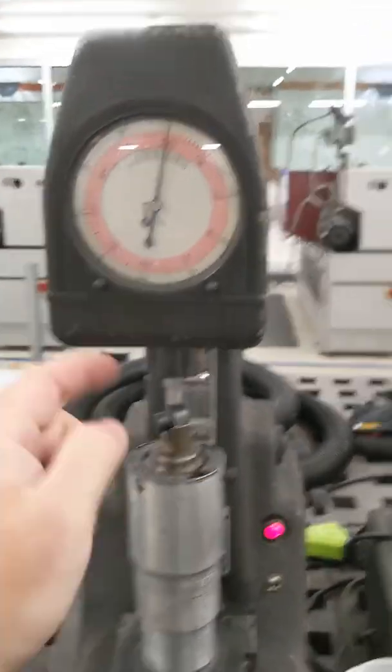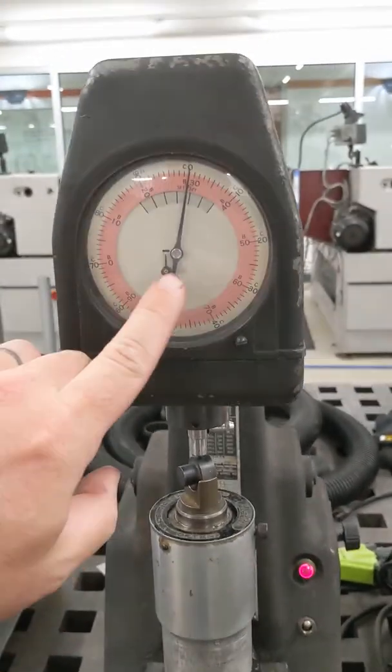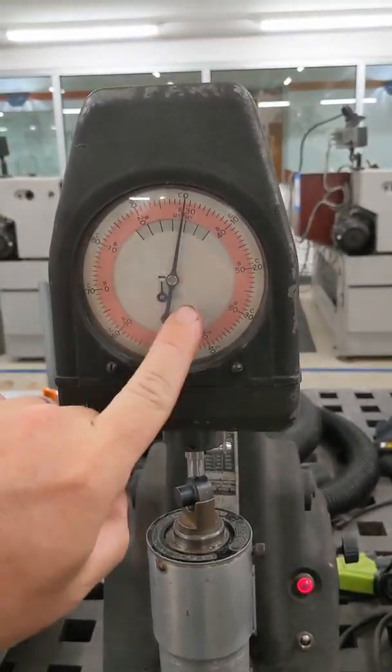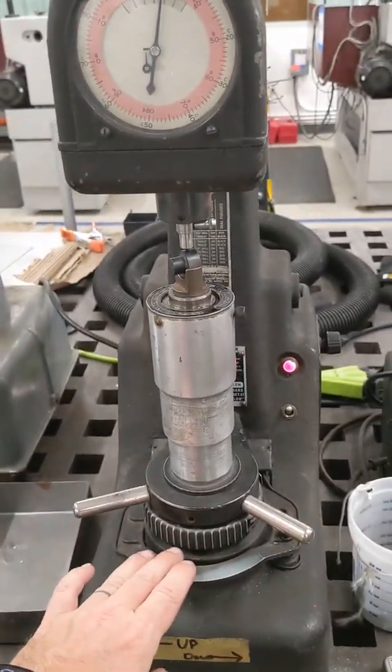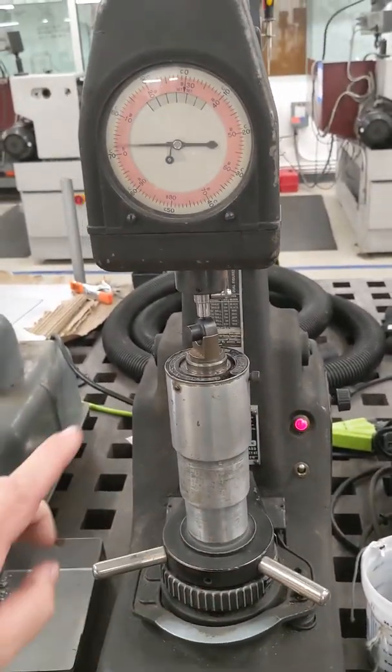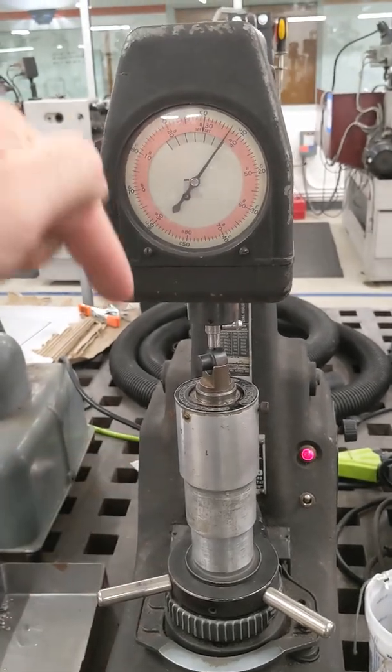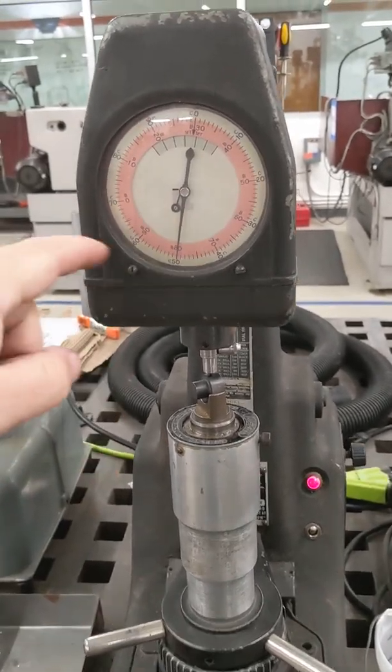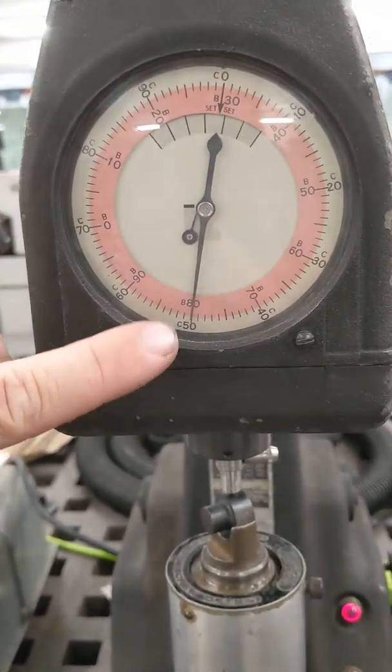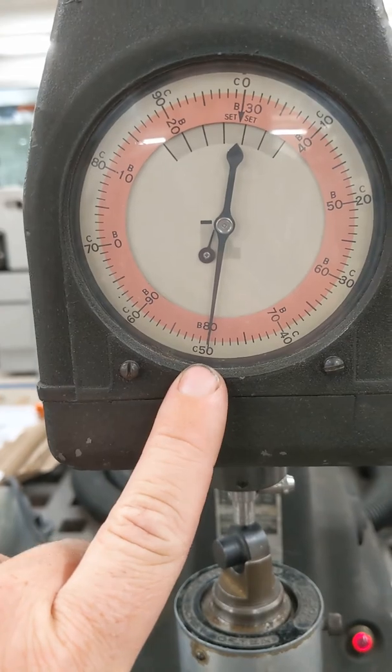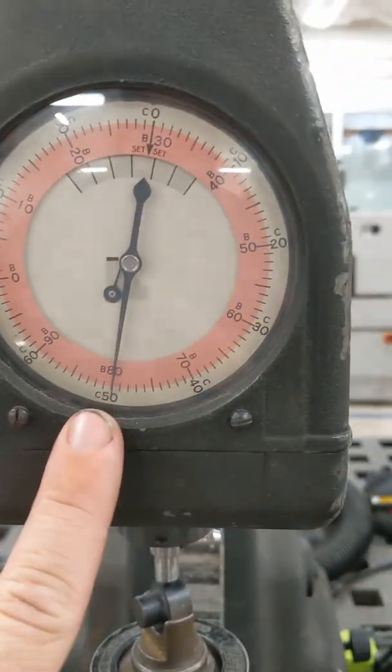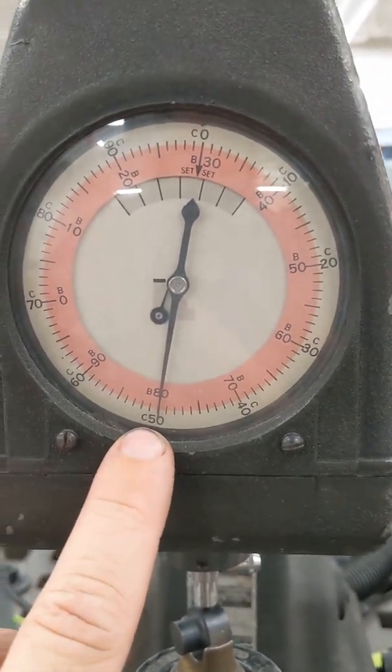Once the sample is placed up against the indenter, the little needle is pointing straight up, and we've zeroed the scale, then you press down once on this little paddle and the machine performs the test. It applies additional load to the part, and when the needle springs back, this is the number that we read to get the hardness measurement. This part right now is reading a hardness of Rockwell 50C.